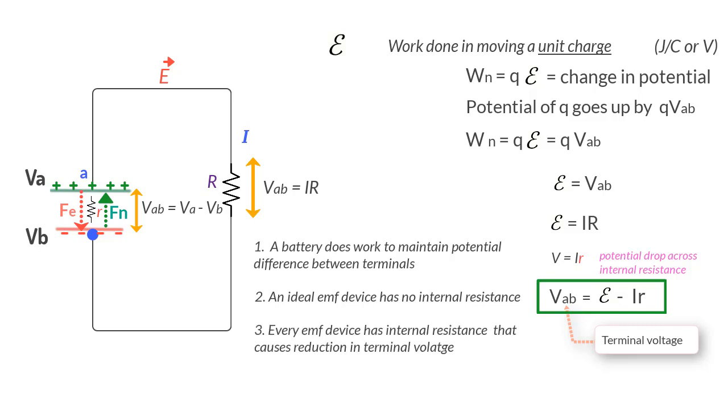Three, in reality every EMF device has internal resistance that causes reduction in terminal voltage. And four, the terminal voltage will be the same as the EMF if there is no current or I is zero.